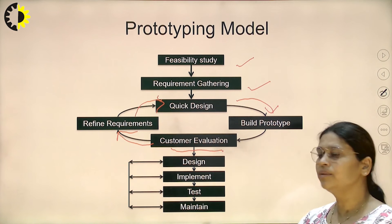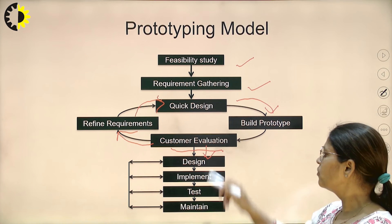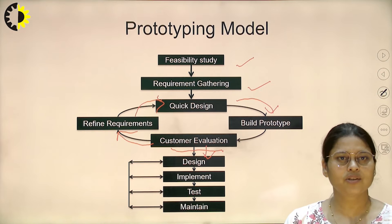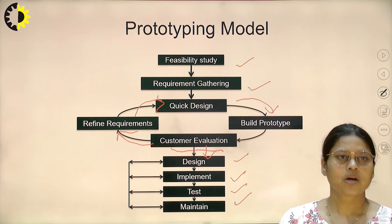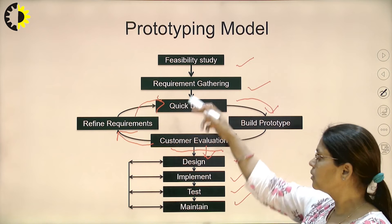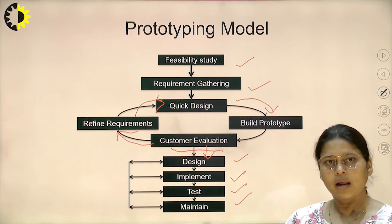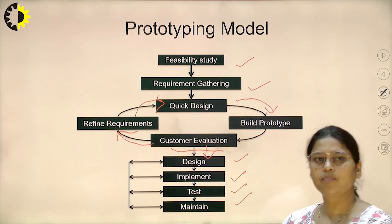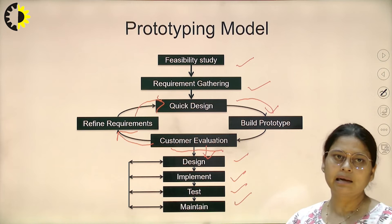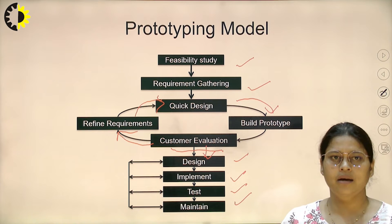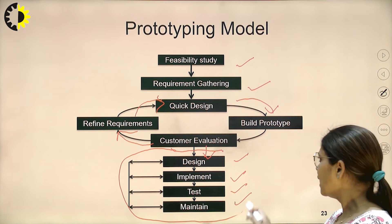Once all the requirements are defined and reviewed by the customer, the software moves to the actual implementation phase: designing, then implementation, then testing, and then maintenance. After this requirement analysis phase it effectively becomes a waterfall model. So the similarity between the prototype model and the waterfall model is that once requirements are clearly identified by the customer through the prototype, the whole system then behaves like a waterfall model.